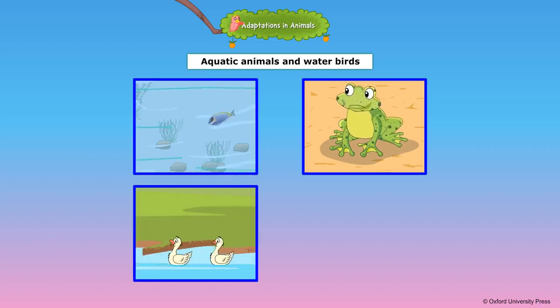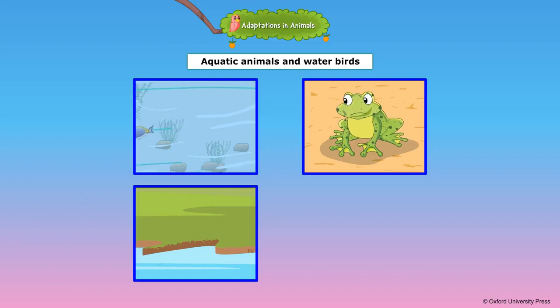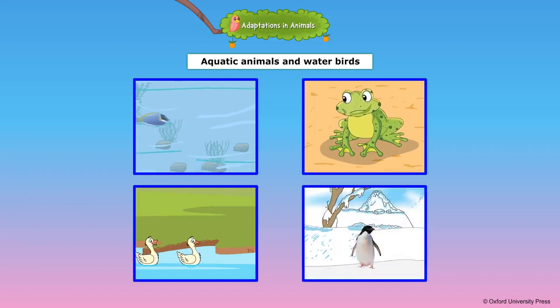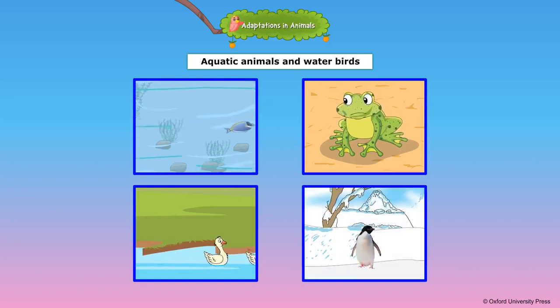Water birds such as ducks have webbed feet to swim in water. The wings of the penguin have evolved into flippers that help them to swim.